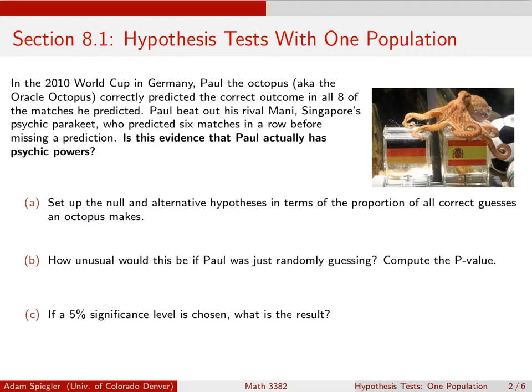And then they looked at which of the animals was the best predictor. Paul the Octopus was in an aquarium in Germany, and he predicted all seven of the matches that Germany played in correctly, as well as the finals. He predicted correctly that Spain was going to be the champion. So Paul was eight for eight in terms of his predictions.